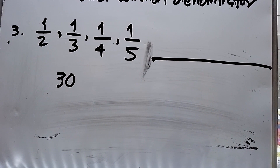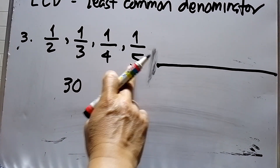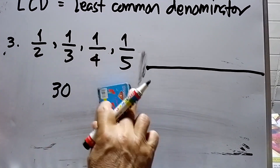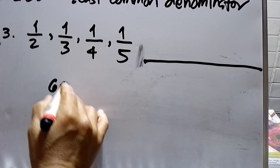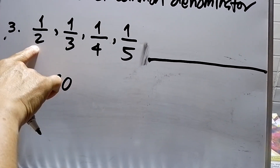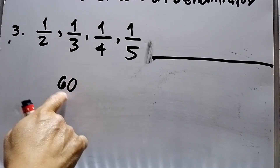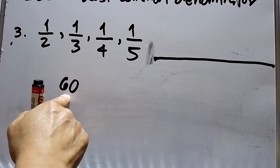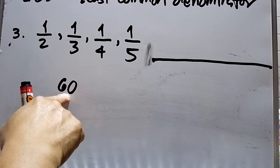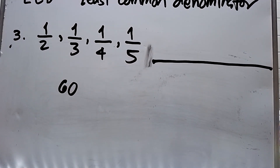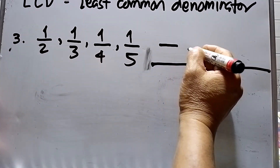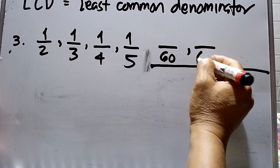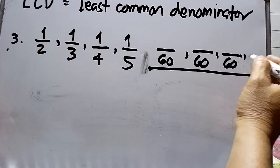Let's try LCD of 30. Can we divide 30 by 2? Yes. 30 divided by 3 is 10. But 30 divided by 4 gives a decimal, so 30 cannot be used. Let's try 60 instead. 60 can be divided by 2, by 3, by 4, and by 5. Therefore the LCD for these four fractions is 60.